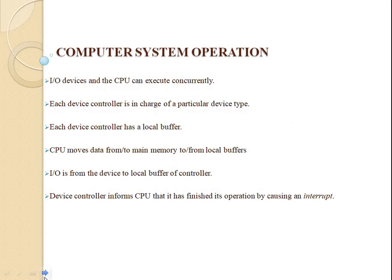Now, the computer system operations: I/O devices and the CPU can execute concurrently. Each device controller is in charge of a particular device type and has a local buffer. The CPU moves data from memory to the local buffer. Input/output is performed between the device and its local buffer. The device controller informs the CPU it has finished its operation by causing an interrupt.